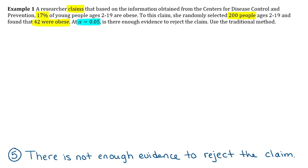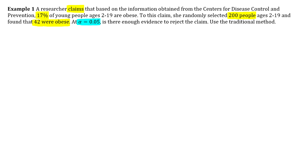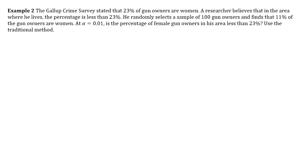Example two: The Gallup Crime Survey stated that 23% of gun owners are women. A researcher believes that in the area where he lives the percentage is less than 23%. He randomly selects 100 gun owners and finds that 11% of the gun owners are women. Alpha is 0.01. Is the percentage of female gun owners in his area less than 23%? Use the traditional method.